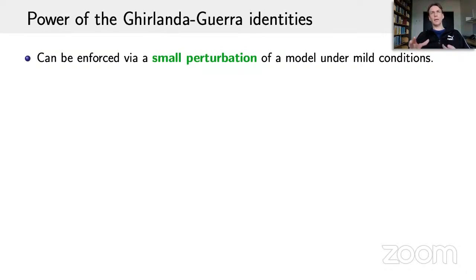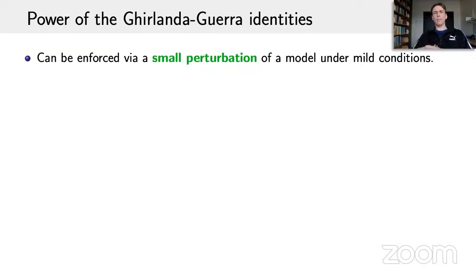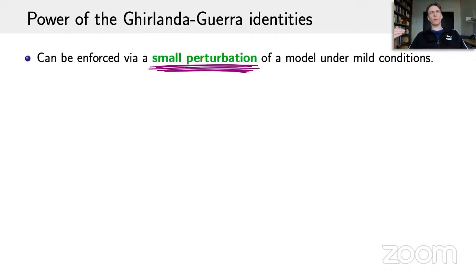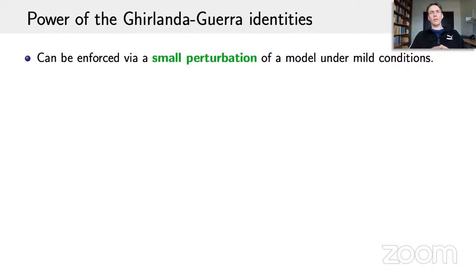One important thing to emphasize is that the Ghirlanda-Guerra identities turn out to be very powerful in applications because the proof of these identities is rather soft and has a lot of flexibility built in. In particular, once this idea was understood in the setting of the Sherrington-Kirkpatrick model, one can easily transfer it to many other models under mild conditions — specifically in the perturbative sense that one can add a relatively small perturbation to the model which does not affect the maximum or the free energy, but this perturbation can be used to enforce the Ghirlanda-Guerra identities. So in many different models one can obtain these identities and their consequences, including ultrametricity of the overlaps.